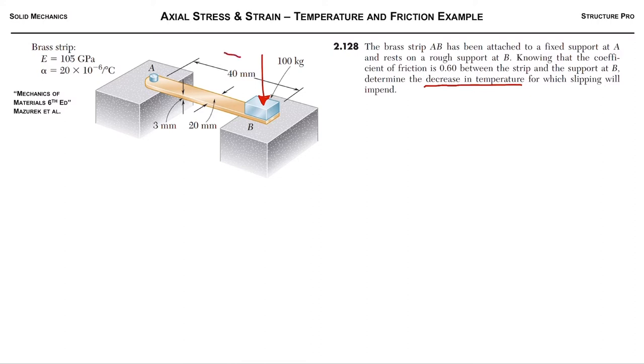And the key here is that we got this block here with a weight and it's causing friction. So while the strip wants to shrink with a decrease in temperature and it wants to slip to the left, we got the block here which is causing friction which will oppose it in the direction to the right. So as you probably guessed, we're going to start by drawing a free body diagram just to get a sense of what's going on with this strip.